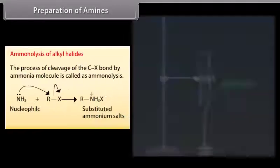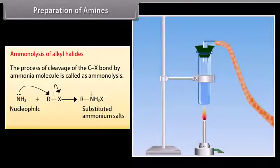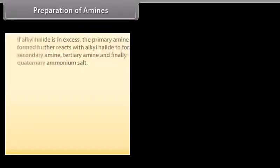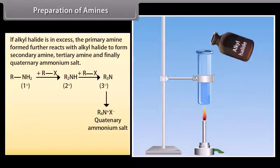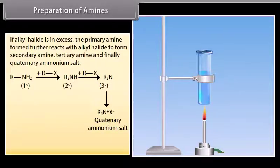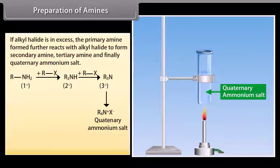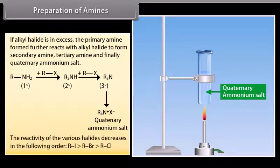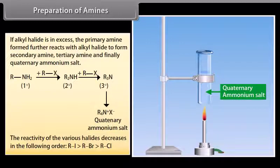Ammonolysis of alkyl halides: If alkyl halide is in excess, the primary amine formed further reacts with alkyl halide to form secondary amine, tertiary amine, and finally a quaternary ammonium salt. The reactivity of the various halides decreases in the following order: RI > RBr > RCl.